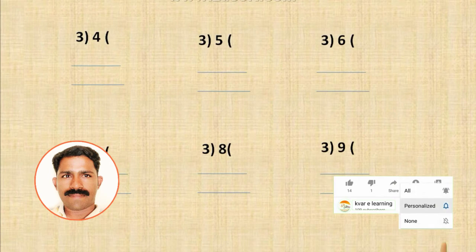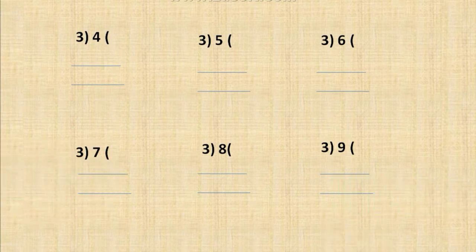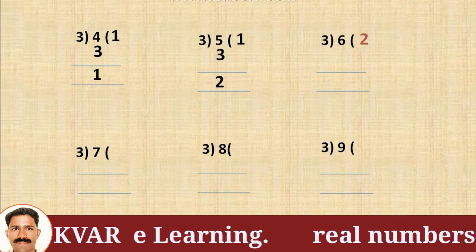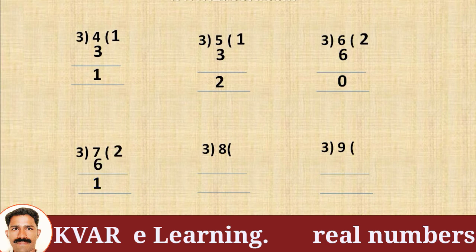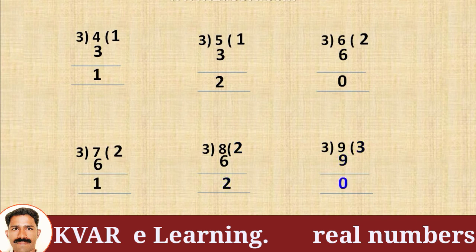Three table example: divide 1 to 9 by 4, 5, 6, 7, 8, and 9. 3 times 1 is 3 remainder 1, 3 times 1 is 3 remainder 2, 3 times 2 is 6 remainder 0, and so on. The remainder values are 1, 2, 0, 1, 2, 0.